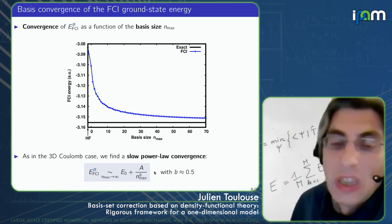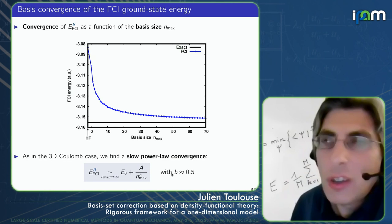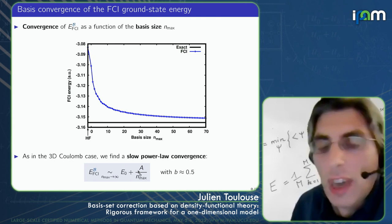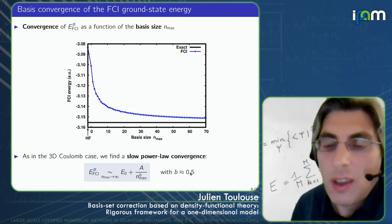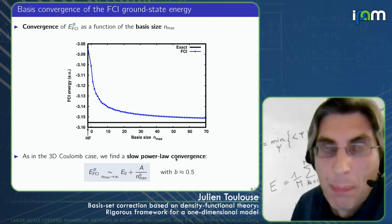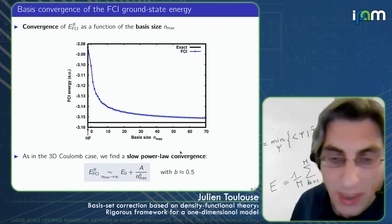The convergence behaves like a/n_max^b, where b is approximately 0.5. This is actually slower than in the 3D case, where convergence tends to go as 1 over the number of basis functions. In any case, it is a similar power law, and this is all we need to study the basis convergence problem. This confirms the 1D model is a good proxy for the 3D convergence issue.